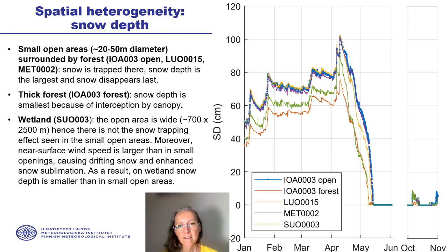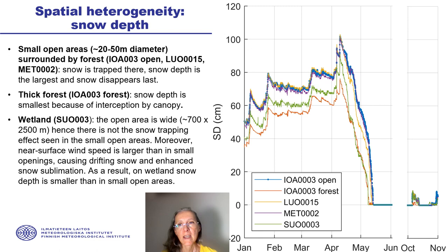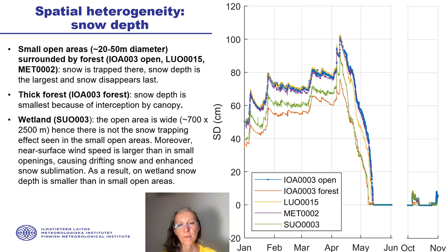In the thick forest, the red line, snow depth is smallest because of interception by the canopy. In the wetland, the green line, there is no snow trapping effect, and because the area is wide — over two to three kilometers — near-surface wind speed is larger than in the small opening, causing drifting snow and enhanced snow sublimation. As a result, on wetlands, snow depth is smaller than in small open areas.